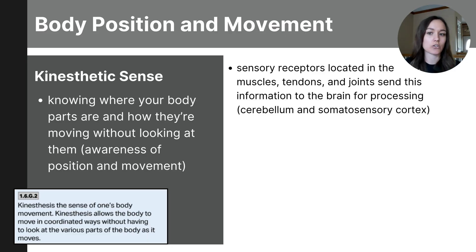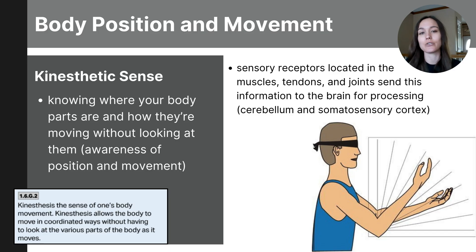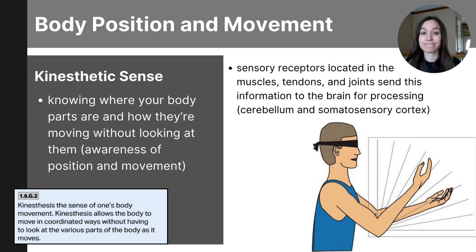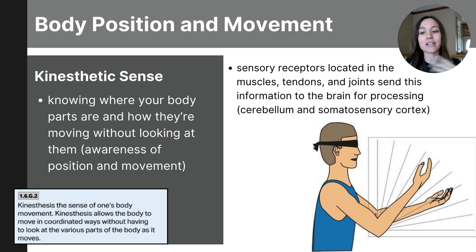You can test your kinesthetic sense by touching your nose with your eyes closed. Extend one arm straight in front of you with your index finger pointing, close your eyes, and bring your finger to touch the tip of your nose. Try it again by touching your opposite ear, your chin, your shoulder, your belly button. You could likely do all of that with your eyes closed fairly accurately because of your spatial and bodily awareness — that is your kinesthetic sense.